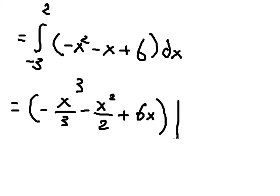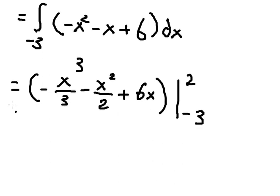We put the bounds from negative 3 to positive 2. Now I will put 2 in here and negative 3 in here. So we calculate this, and we have 125 over 6.